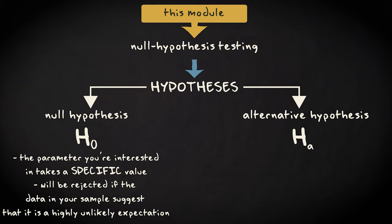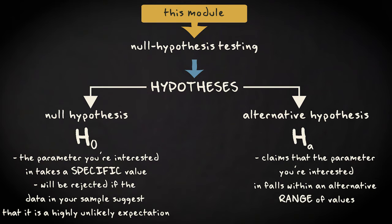It is the hypothesis that will be rejected if the data in your sample suggest that there is a highly unlikely expectation. The alternative hypothesis claims that the parameter you're interested in falls within an alternative range of values. The null hypothesis and the alternative hypothesis are always mutually exclusive.